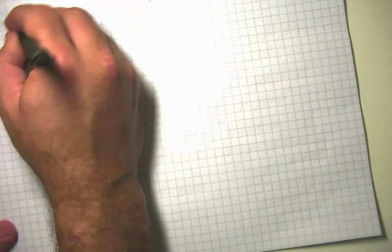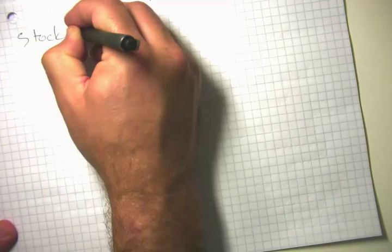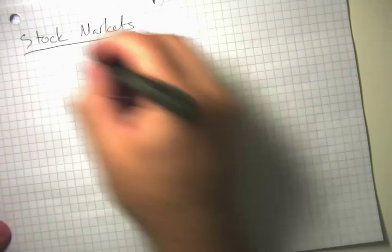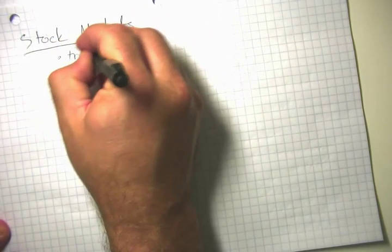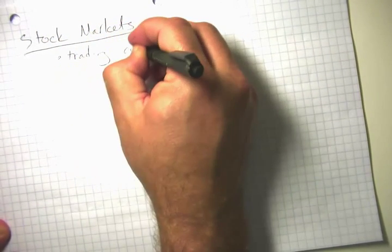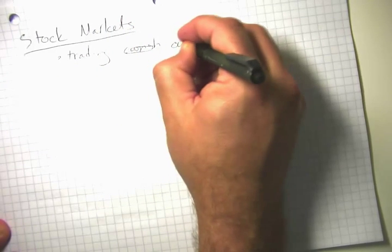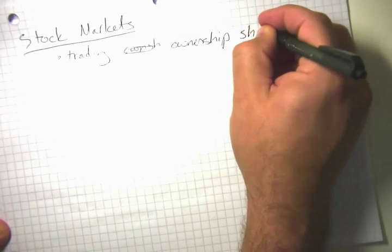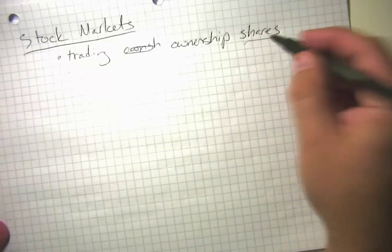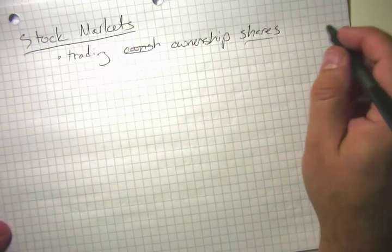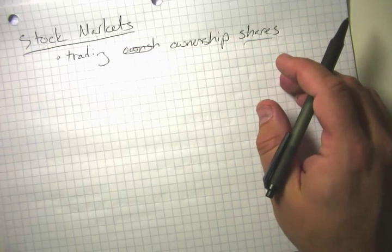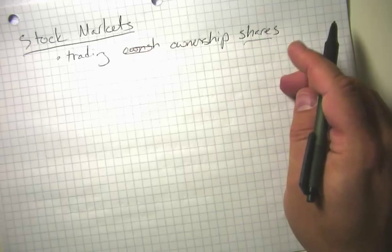What about stock markets? In stock markets, we're trading ownership shares. Everyone who owns a share of stock is a kind of partner in the company, with the amount of their partnership proportional to the number of shares they own.